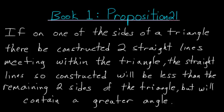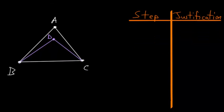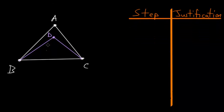For Book 1, Proposition 21 of Euclid's Elements: if on one of the sides of a triangle there be constructed two straight lines meeting within the triangle, the straight lines so constructed will be less than the remaining two sides of the triangle but will contain a greater angle.